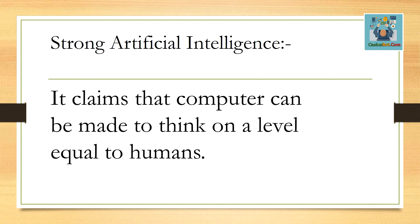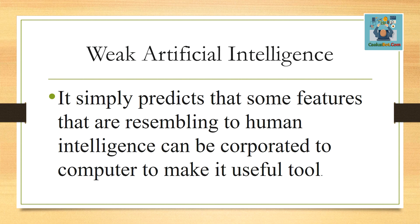We have strong artificial intelligence and weak artificial intelligence. Strong artificial intelligence means that a computer can be made to think on a level equal to humans, making decisions like a human. Weak artificial intelligence only predicts and implements features that are present in human intelligence in a computer. Thank you.